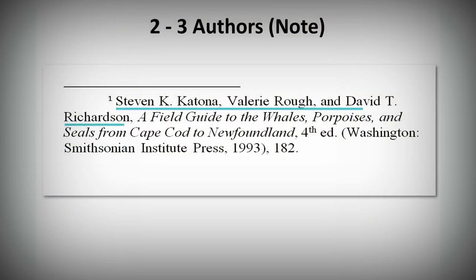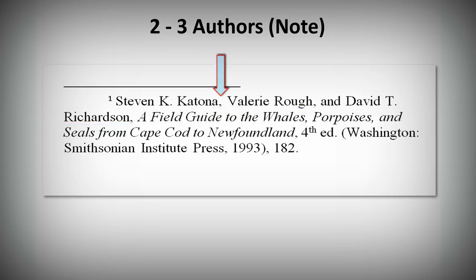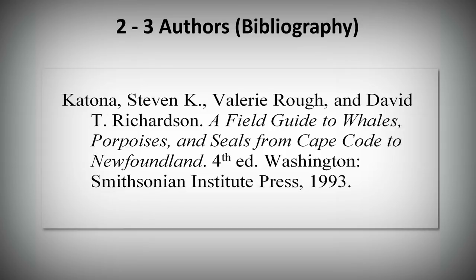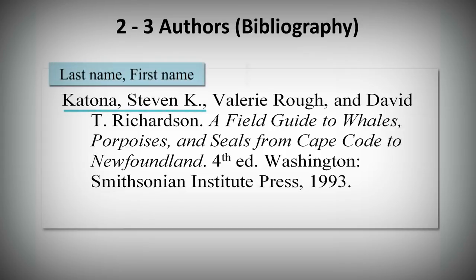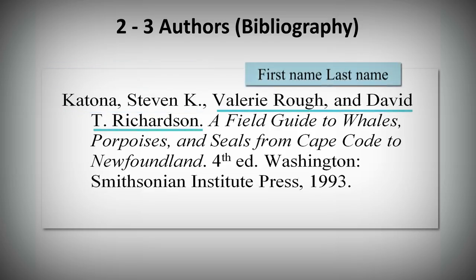When you have two to three authors, list them all. Separate the authors' names with commas and include AND before the last author's name. In your bibliography, list all authors' names as well. Invert the first author's name — their last name goes before their first name — and the second and third authors' names are written normally.